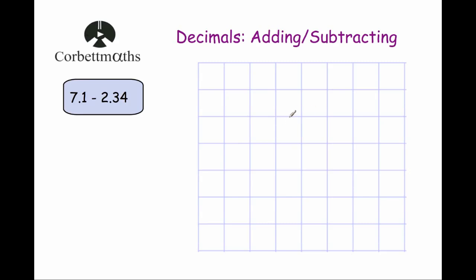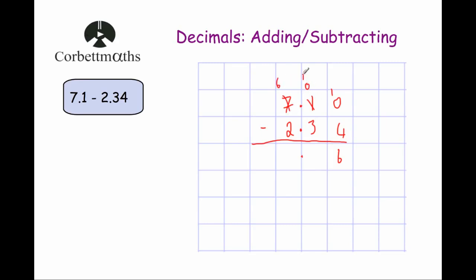Our second last example is 7.1 subtract 2.34. Let's be careful lining it up: 7.1 subtract 2.34. We put the line underneath and then add a 0 to 7.1 to make sure they have the same number of digits after the decimal point. So 0 take away 4 we can't do — borrow 1, call that 0 and bring it over to make 10. 10 subtract 4 is 6. Again 0 subtract 3 we can't do — borrow 1, call that 6, bring over to make 10. 10 subtract 3 is 7. And 6 subtract 2 is 4. So 7.1 subtract 2.34 equals 4.76.